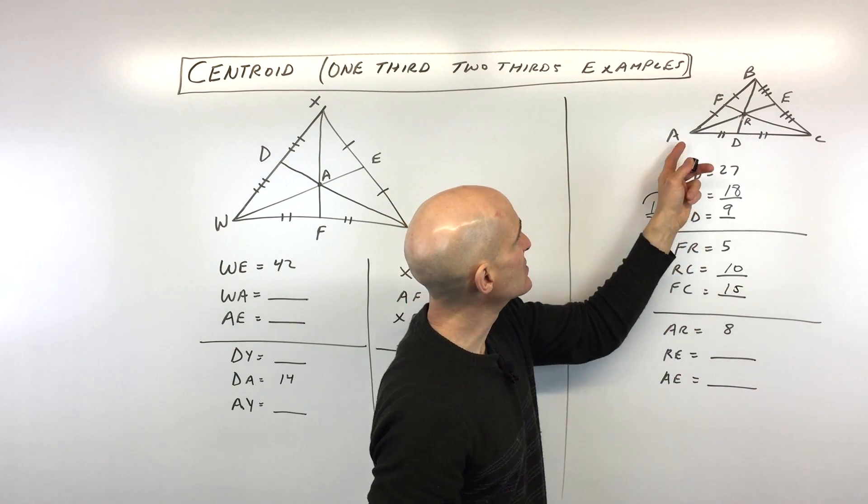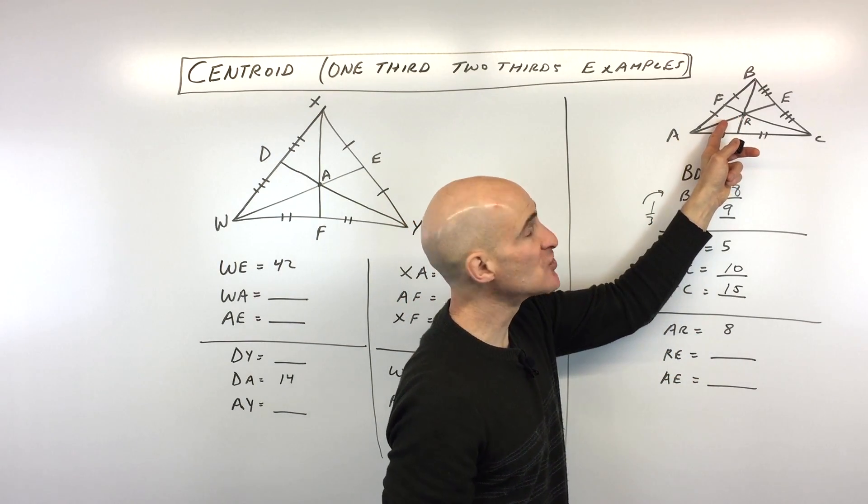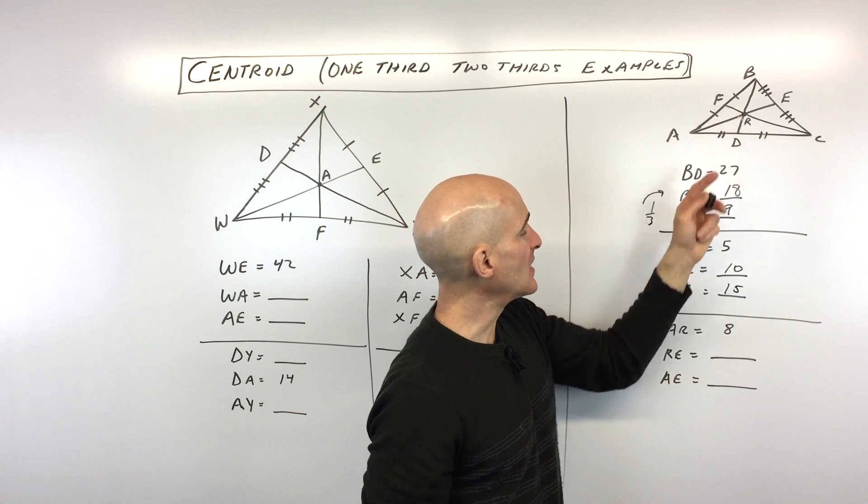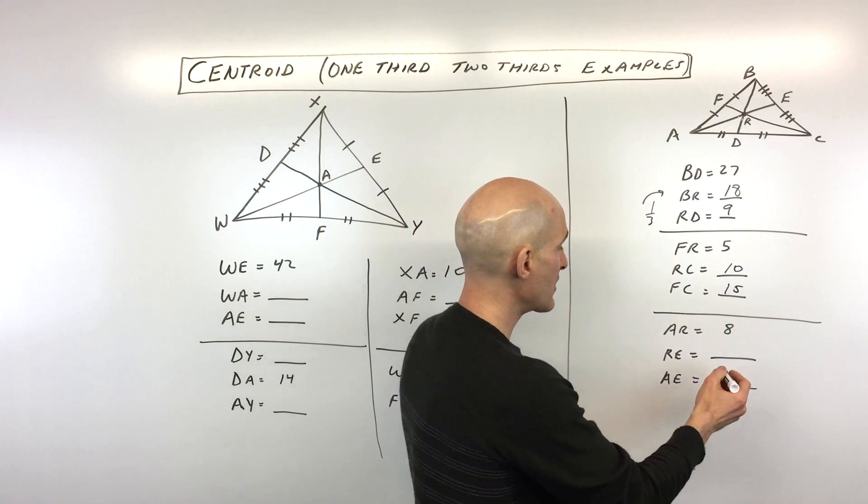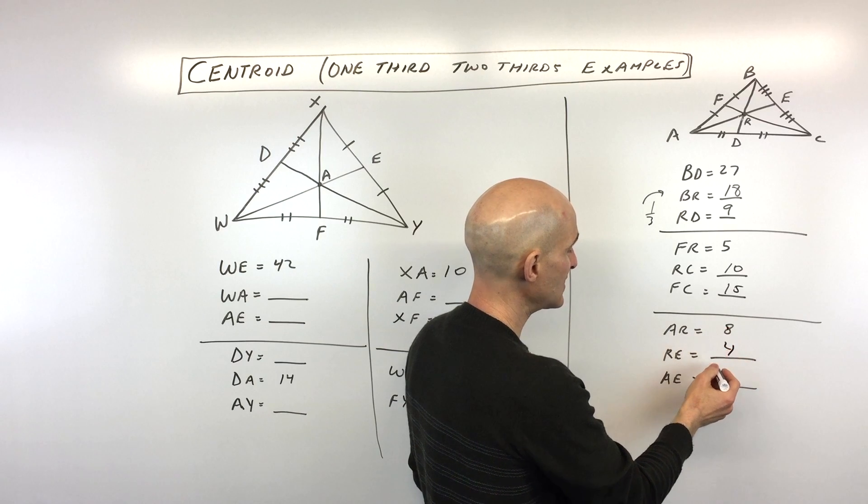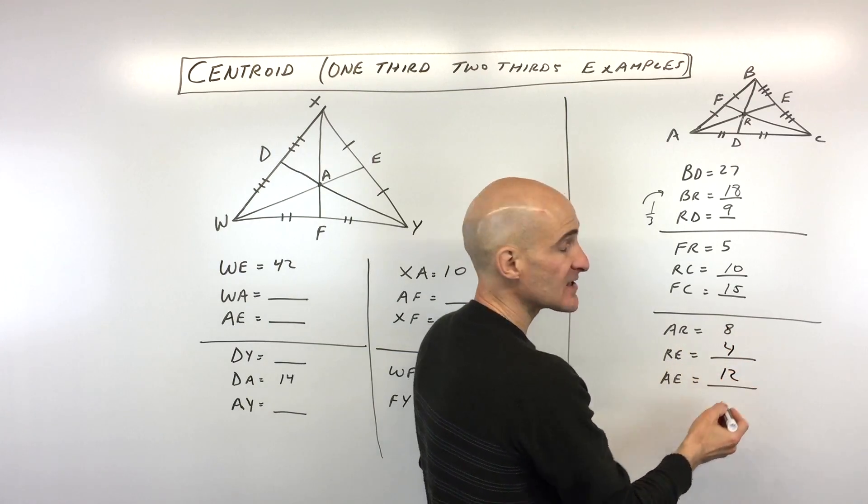Okay, now AR is eight. So let's look at this one. So AR is eight. That's the two-thirds portion of the median. So that means if we divide that in half, RE is going to be four. And if we add these together to find AE, that's going to be 12.